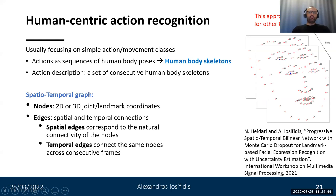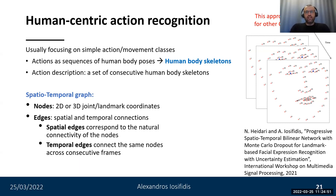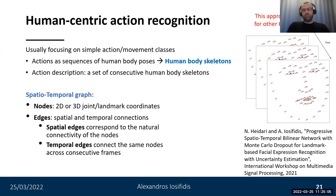Similar types of spatiotemporal graphs can be used to approach other computer vision problems, like facial expression recognition using a spatiotemporal graph formed by landmark points on the human face. You can see how we used similar approaches in a paper published last year.